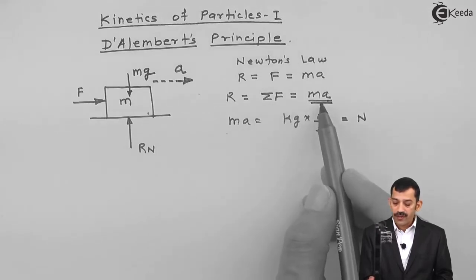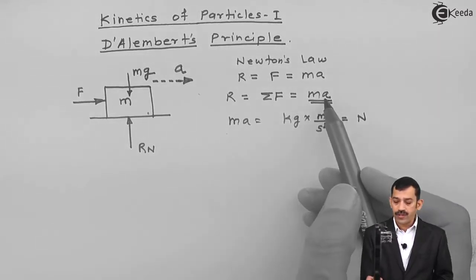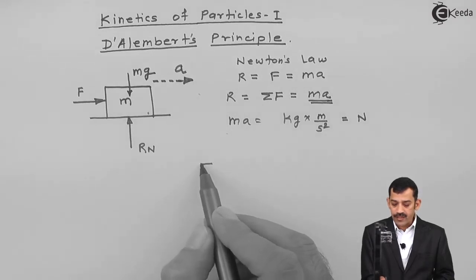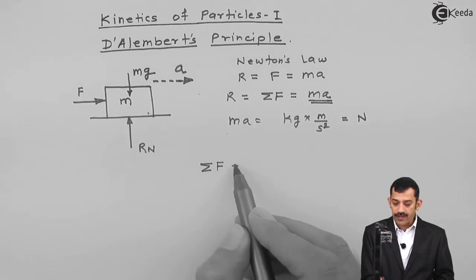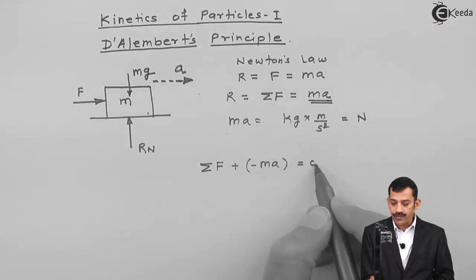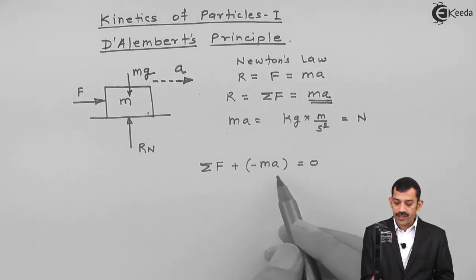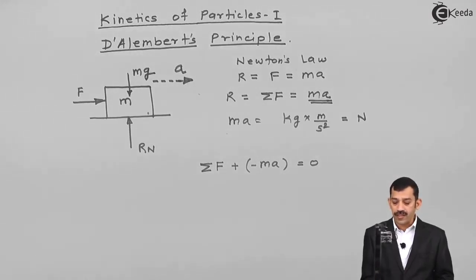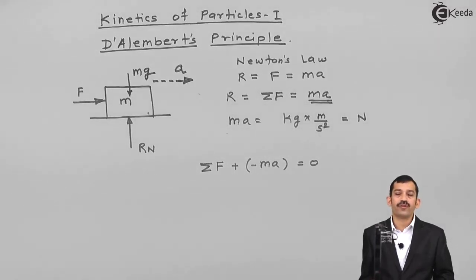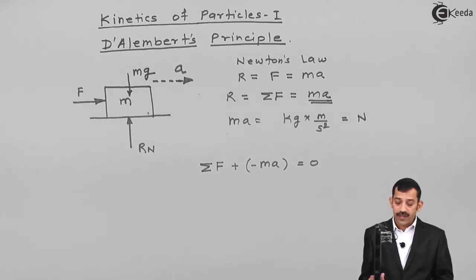If I take this mA term to the left side, since it is a force, all forces will be written on one side of the equal sign. So summation of forces plus minus mA equals zero. That means summation of all forces including this mA with negative sign equals zero. This mA force — mass into acceleration — is called inertia force. The negative sign represents that this force always opposes the motion and acts in the opposite direction of acceleration.